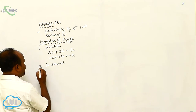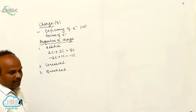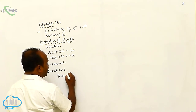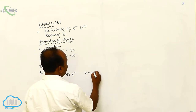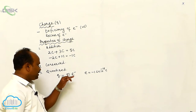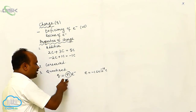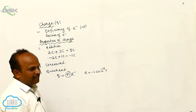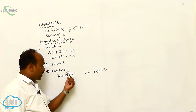The most important property: charge is quantized. Any charge on the surface of the body is equal to an integral multiple of electronic charge. We know that electronic charge is equal to minus 1.6 into 10 to the power of minus 19 coulombs. So any charge is 2 times, 3 times, or 4 times the electronic charge. But 1.5 times the electronic charge is not possible.